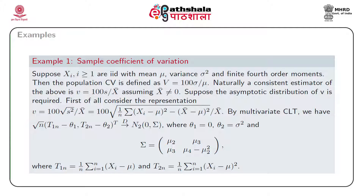Suppose the asymptotic distribution of small v is required. Since we have already found the joint distribution of T_1n and T_2n, we first try to represent v in terms of these. We find the representation: small v equals 100 times the square root of (1/n * summation(x_i - mu)^2 minus (x-bar - mu)^2), all divided by x-bar.